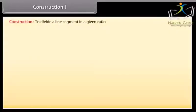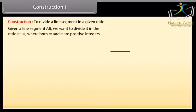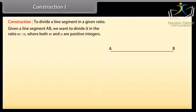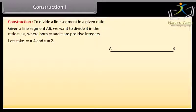Construction 1: To divide a line segment in a given ratio. Given a line segment AB, we want to divide it in the ratio M is to N, where both M and N are positive integers. Let's take M as 4 and N as 2.